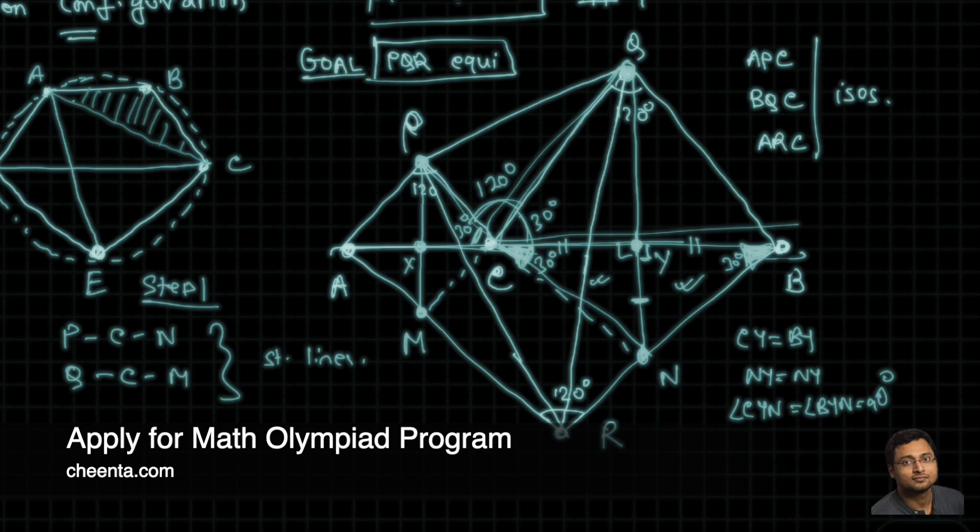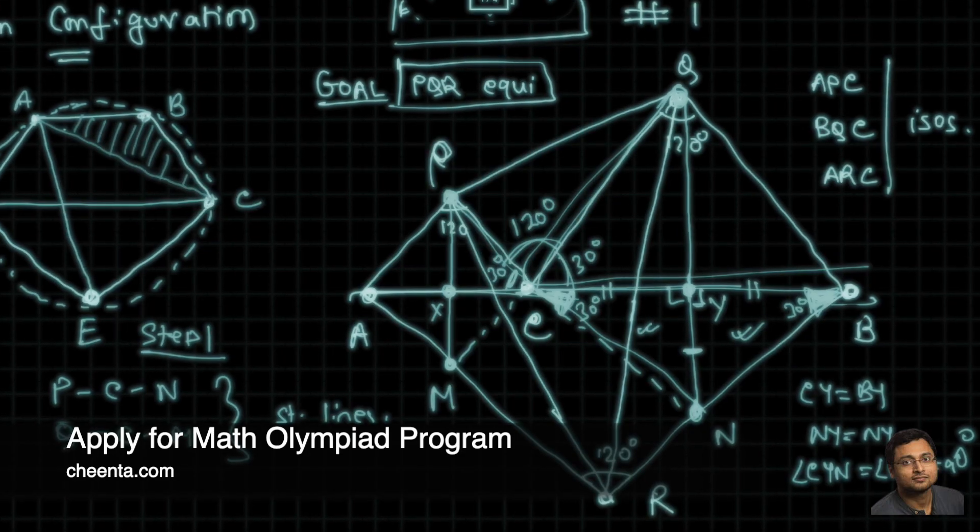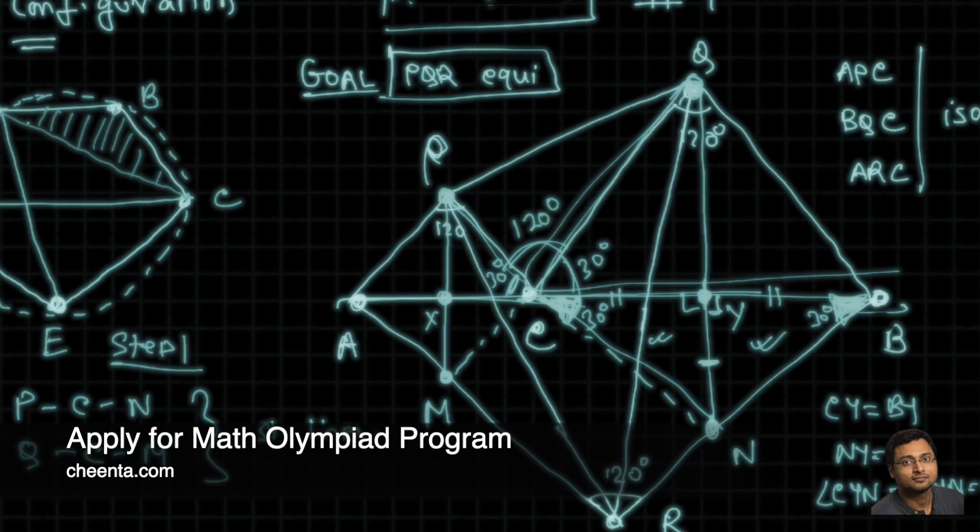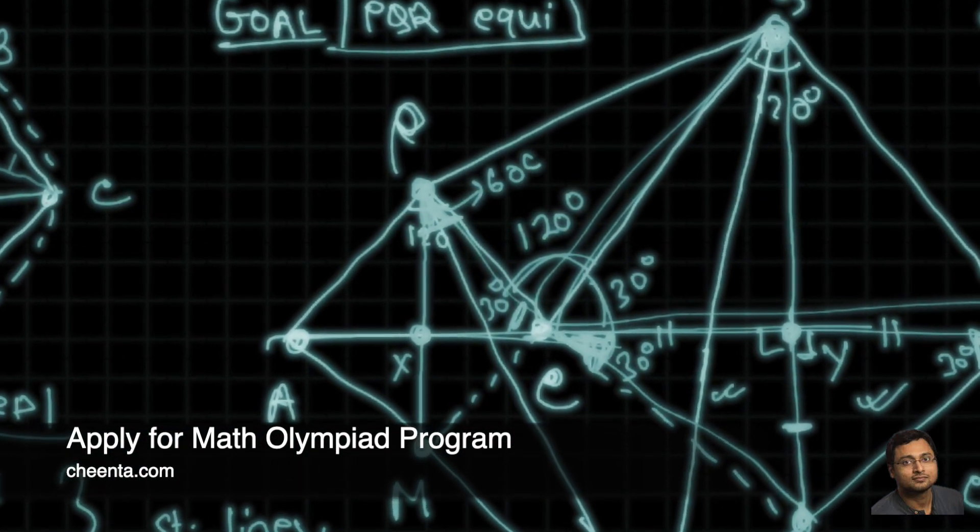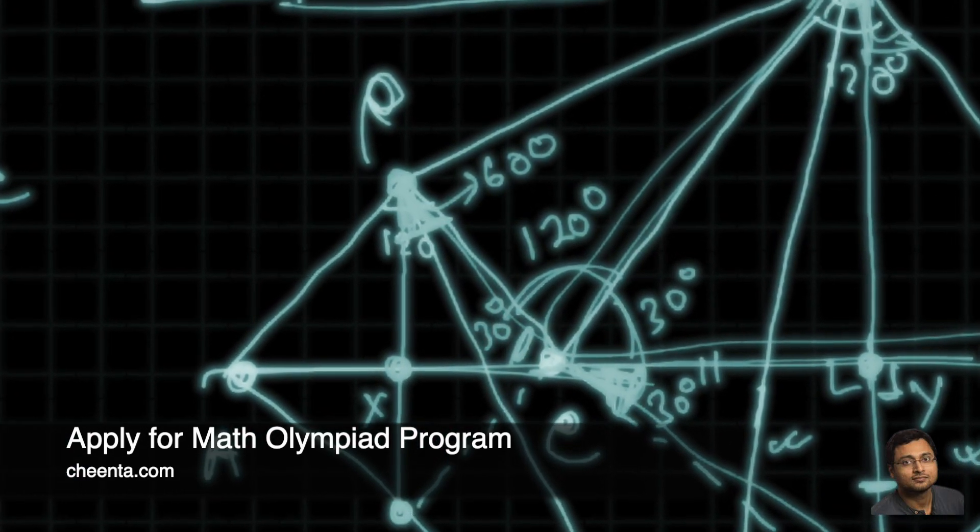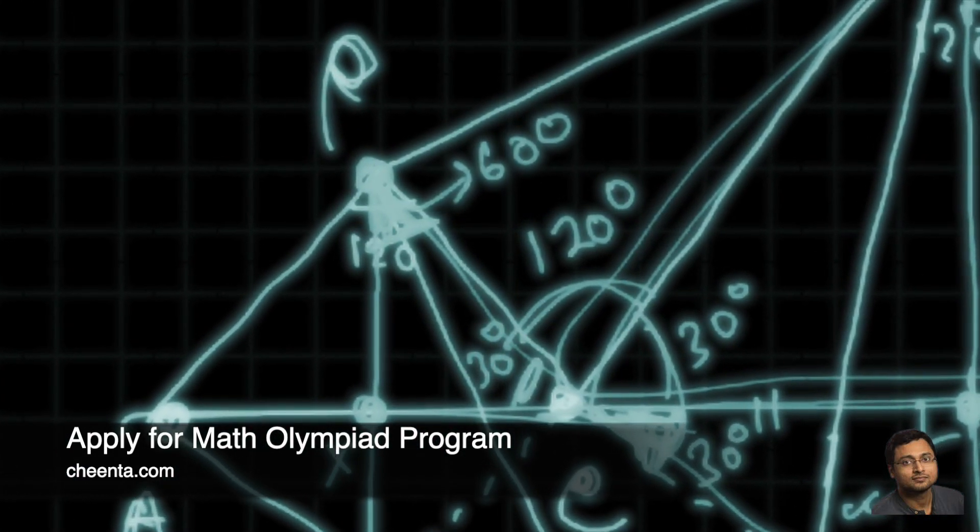So similarly, QCM is also 180 degree. So these are straight lines. Now, notice that these two angles are 60 degree. This is 60. And this one is also, I'm sorry, this one is 60.